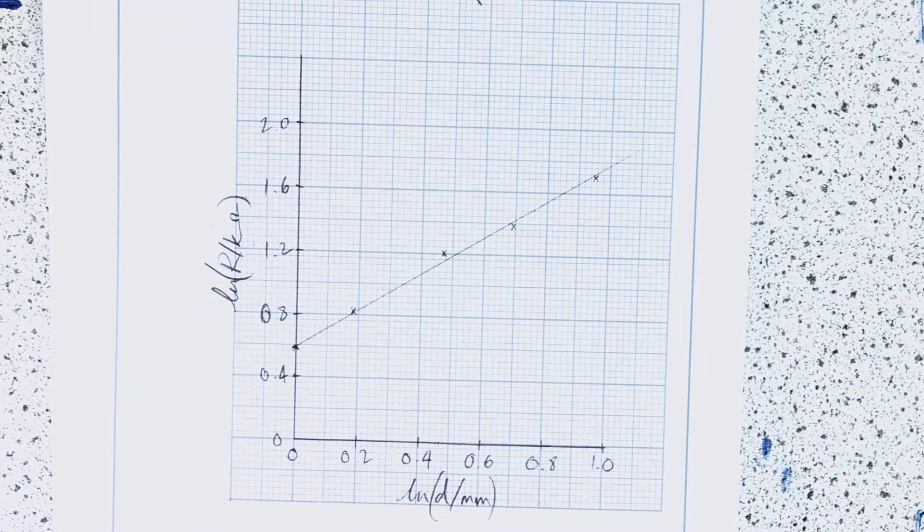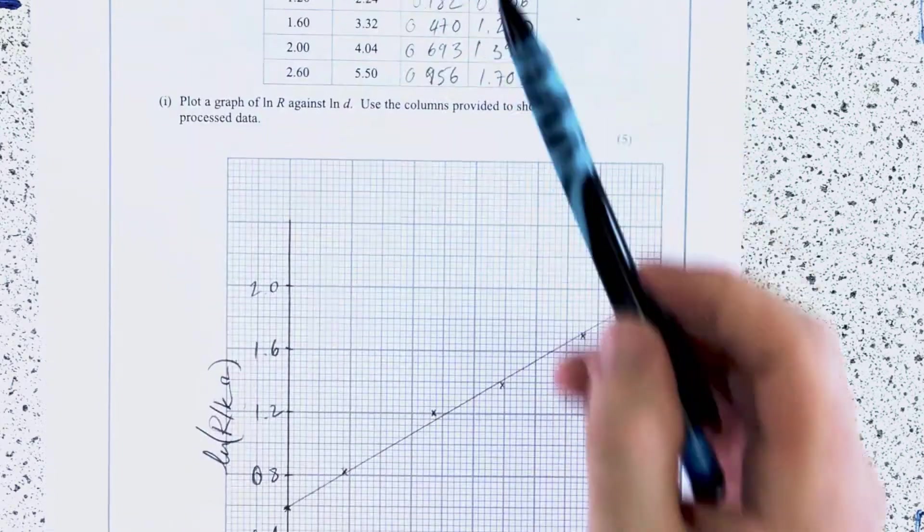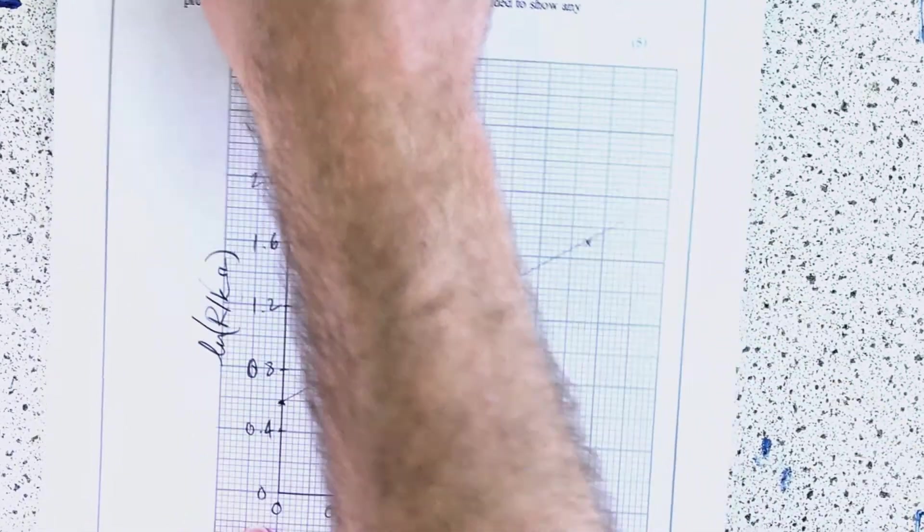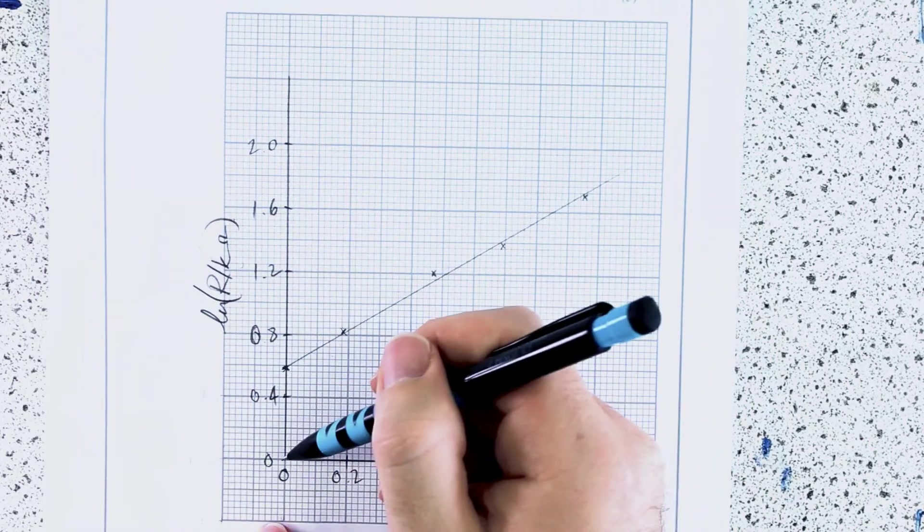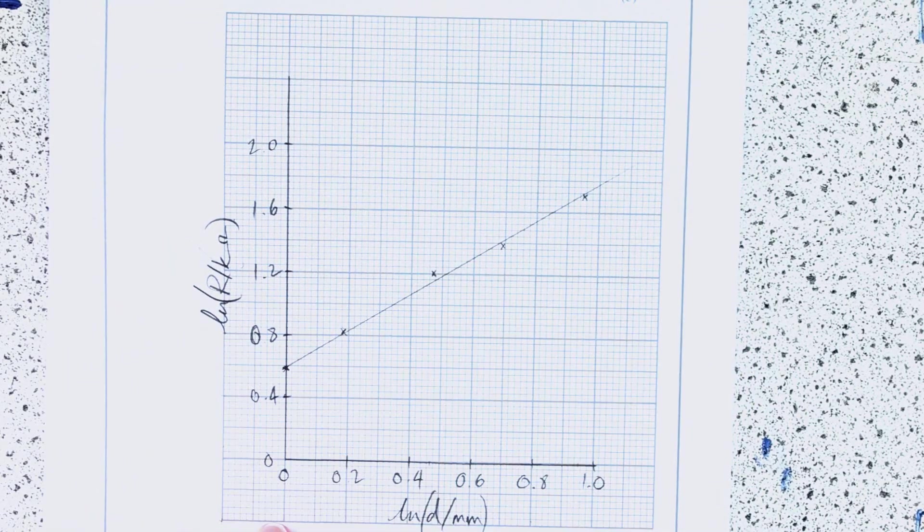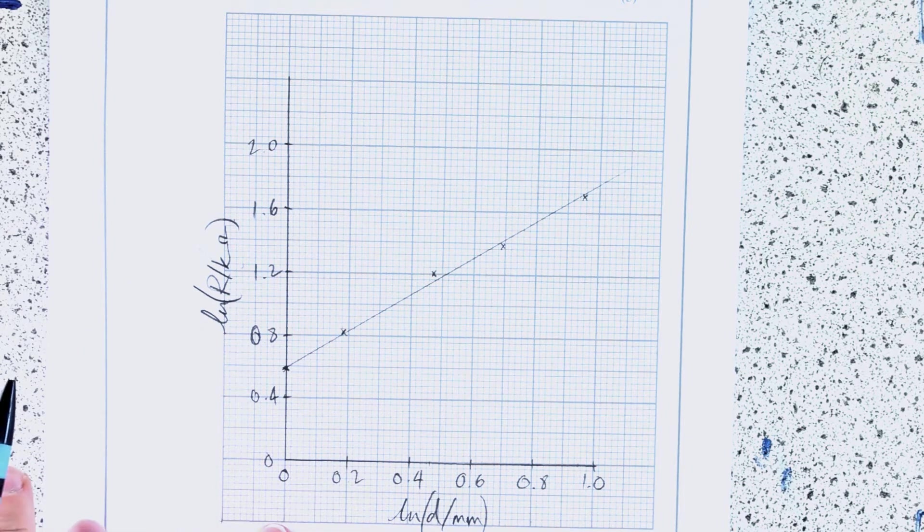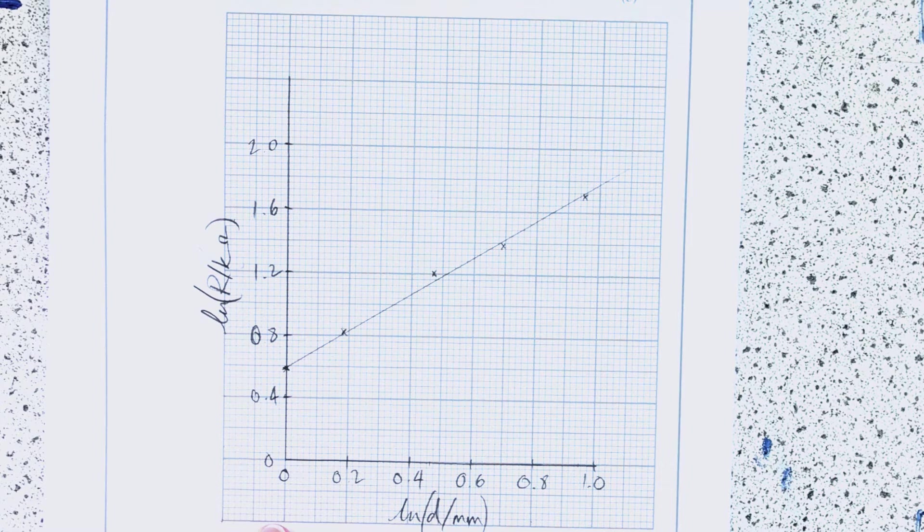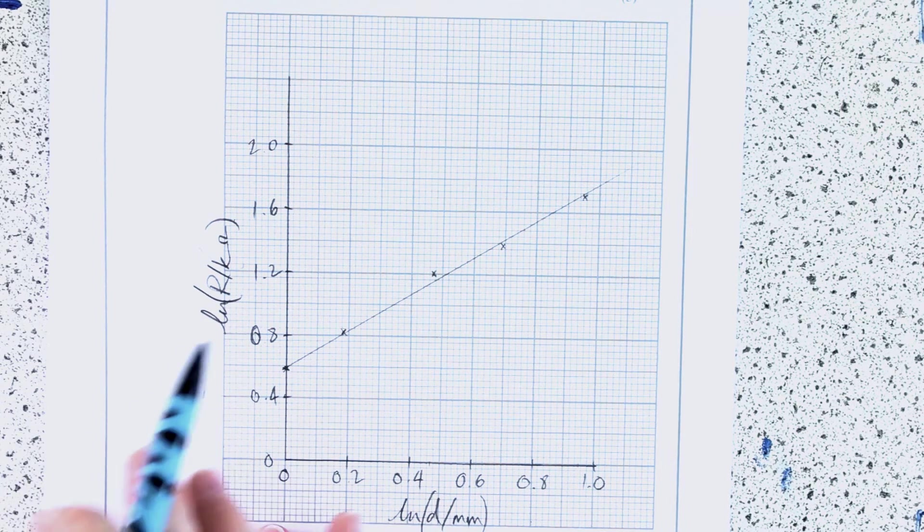So yes, that comes out of a straight line. So they're looking for data and to the correct sig figs, and they're looking for your scales, units of your logged variables, the accurate plotting to within one small square, or one millimeter. It would be actually half a small square in A-level, and line of best fit drawn with as many above as there are below.